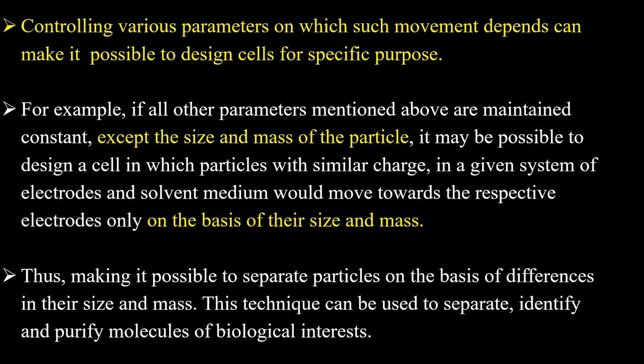By controlling these various parameters, it becomes possible to design cells for a specific purpose. For example, if all other parameters are maintained constant except the size and mass of the particle, it may be possible to design a cell in which particles with similar charge in a given system of electrode and solvent medium would move towards the respective electrodes only on the basis of their size and mass. Thus, making it possible to separate particles on the basis of differences in their size and mass — this technique can be used to separate, identify, and purify molecules of biological interest.